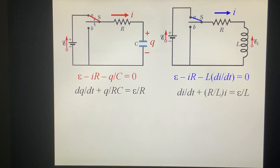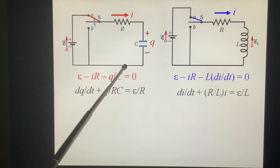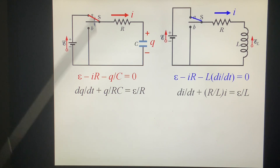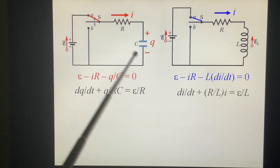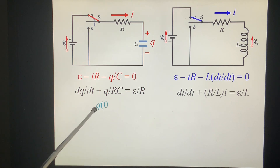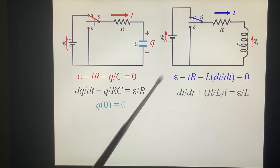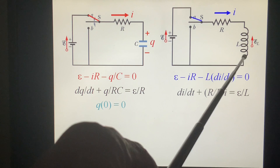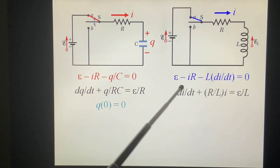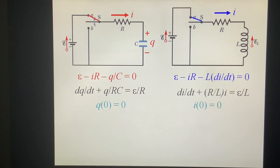These two equations are very similar — only the difference is the sign. And the initial condition: at T equal to 0, there is no charge on this capacitor, so Q(0) equals 0. In this case, I at the beginning is 0 — no current.